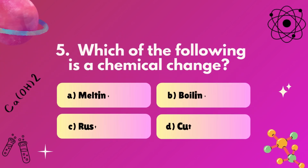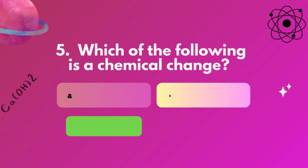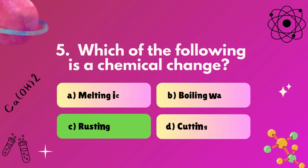Question 5: Which of the following is a chemical change? A, melting ice. B, boiling water. C, rusting iron. D, cutting paper. Correct answer: C, rusting iron.